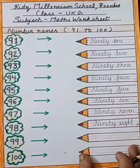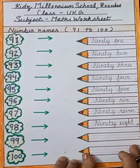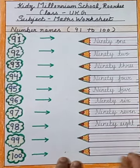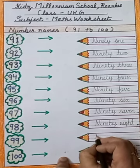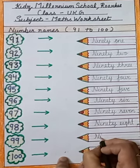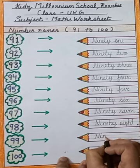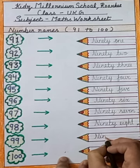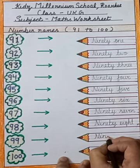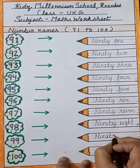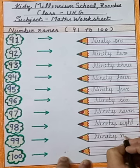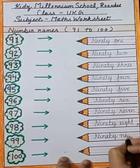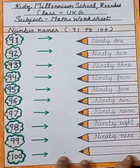Now next number is 99. Spelling is N-I-N-E-T-Y, ninety, N-I-N-E, nine. 99.